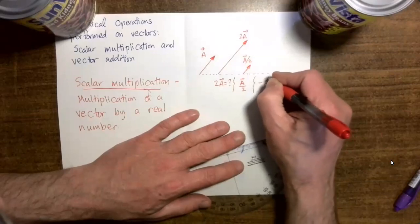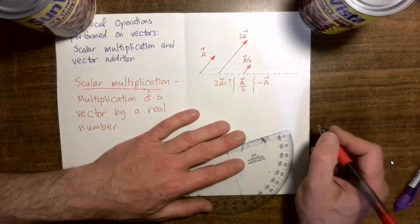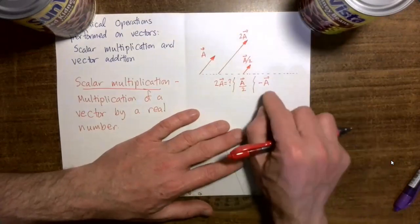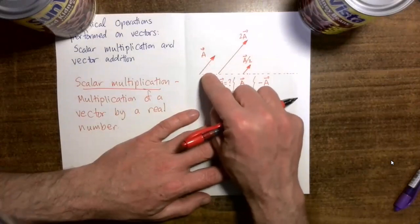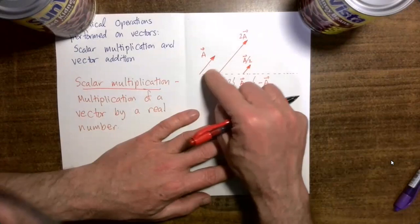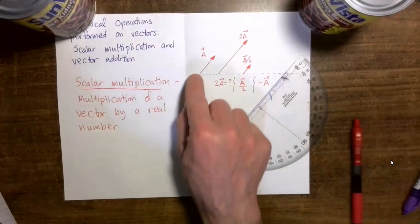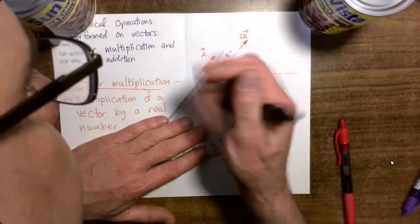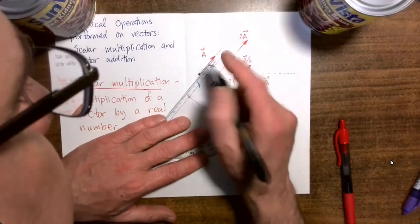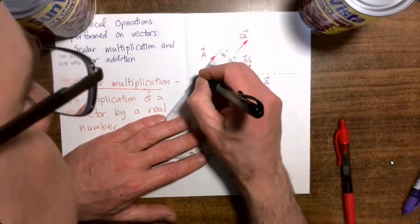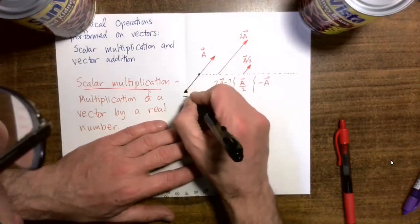Now see if you can predict what vector minus a is going to look like. Vector minus a is going to have the same length as vector a, but it's going to point in the exact opposite direction. So if this is vector a here, you draw a vector of the same length with the exact opposite direction.